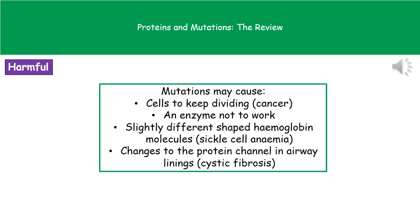The third harmful example is sickle cell anaemia, something you encountered in your core science, where we get slightly different shaped haemoglobin molecules so our body can't transport oxygen as efficiently. And finally, cystic fibrosis — again from core science — where the mutation changes the protein channel in the linings of the airway.